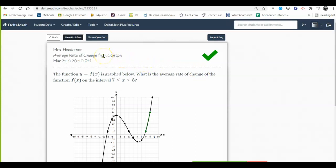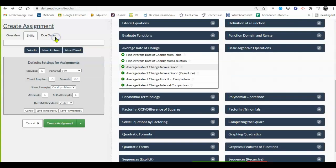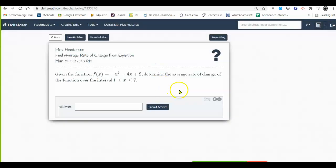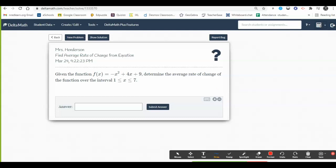That's how you calculate the average rate of change from a graph. Now, how about calculating the average rate of change if I give you an equation? If I give you a function and I want the average rate of change, just like in the graph, I can create a table.